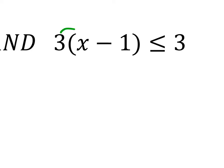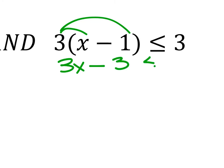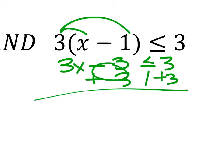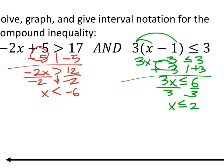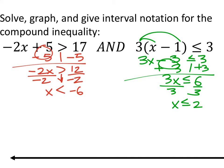For the green one, distribute the three: 3x minus 3, less than or equal to 3. Zero out the negative three by adding three, giving us 3x ≤ 6. Divide both sides by three — since it's positive it won't flip — so x ≤ 2. Now I have these two statements: x < -6 and x ≤ 2.